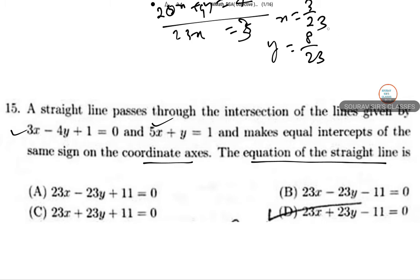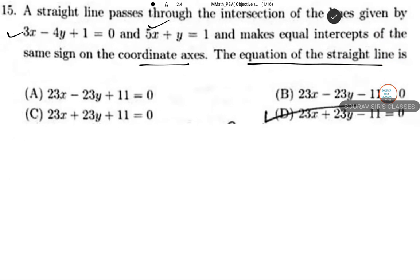So the line we are looking for passes through this point and makes equal and positive intercepts with the coordinate axes. If this is the case, then the slope of such a line equals minus 1. So the equation will be formed as x plus y equals b.